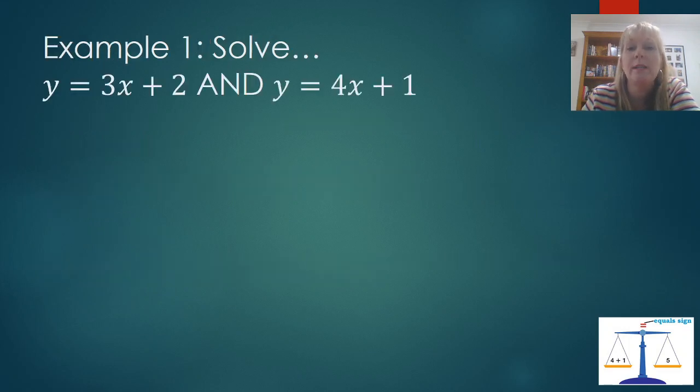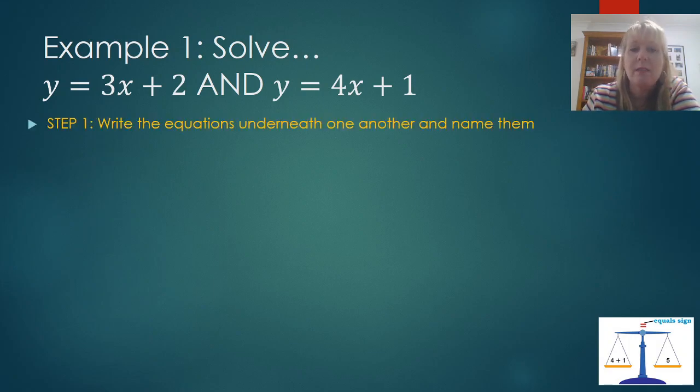So let's look at a worked example. I've got two equations, y equals 3x plus 2 and y equals 4x plus 1. So my first step is I'm going to write those equations underneath one another and name them. I've got equation 1 and equation 2. And the reason I do this is it just makes it easier for me to see which equation I should work with first. It makes it easier if I want to use, for example, the elimination method to work out what I need to do.